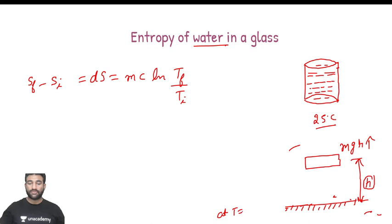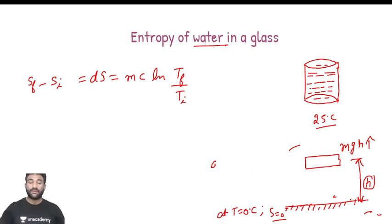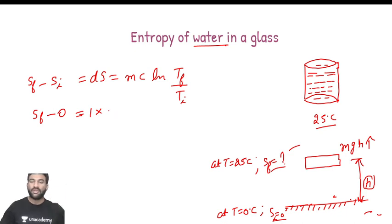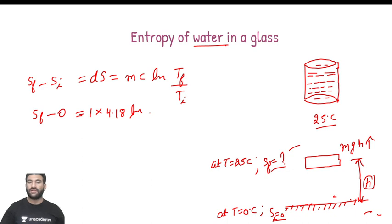At T = 0 degree centigrade, we assume entropy is zero - this is our reference. The initial entropy S_i corresponds to 0°C and the final entropy S_f is what we need at 25°C. Assuming mass = 1 kg (as given by the interviewer), specific heat of water c = 4.18 kJ per kg·K, and temperature ratio in Kelvin: T_final = 273 + 25 = 298 K upon T_initial = 273 + 0 = 273 K.